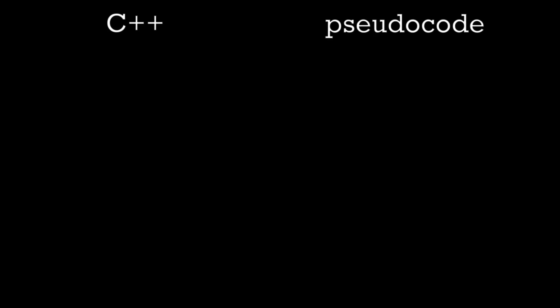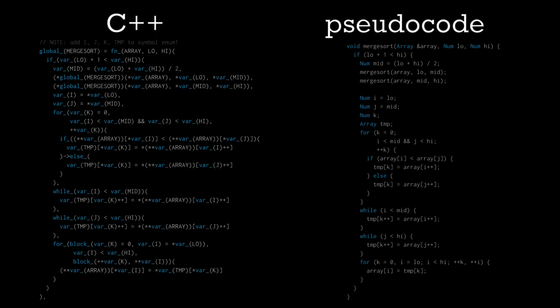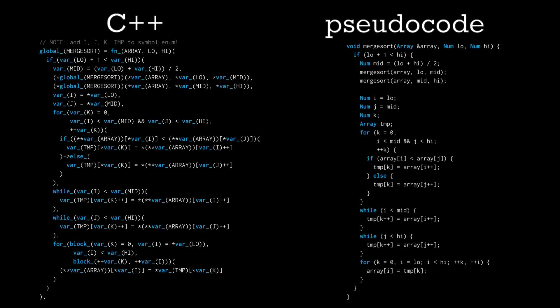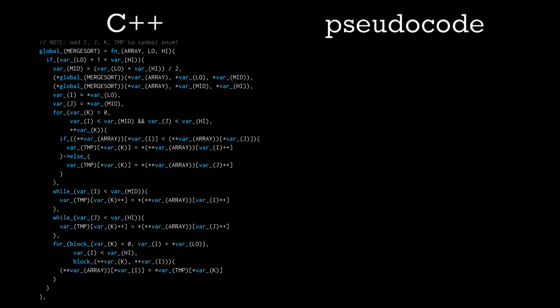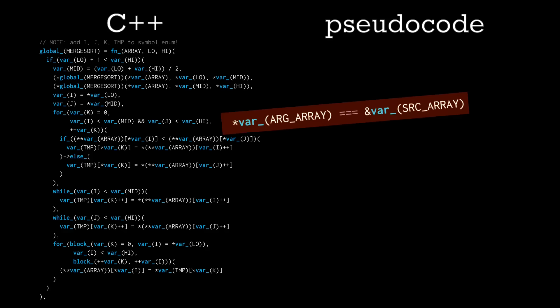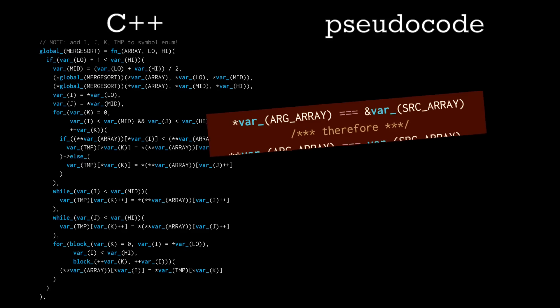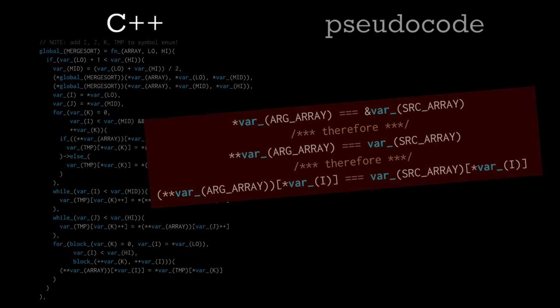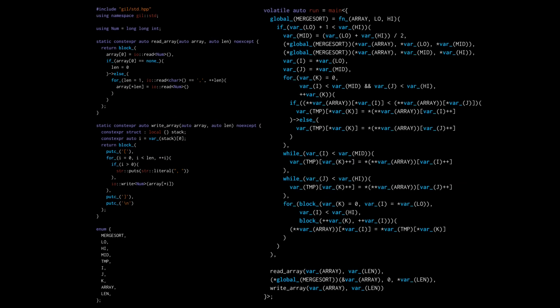Now that the individual halves are sorted, we merge. I know you can avoid using an auxiliary array for the merging, but why are you watching a mathematician program if you care about performance? Again, because the array variable holds a reference to the underlying array, we need to dereference once to expose the reference to the underlying array, but then dereference again to actually get the array. So there we have it — a complete implementation of merge sort in C++.